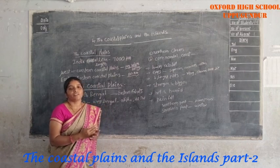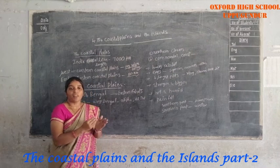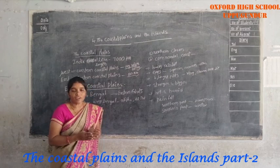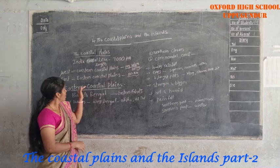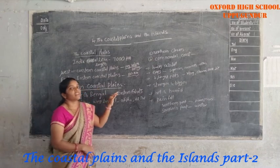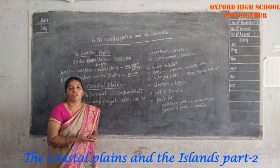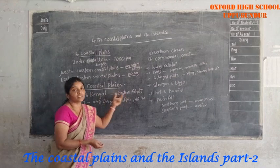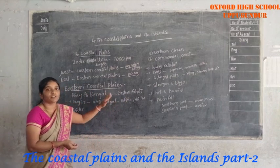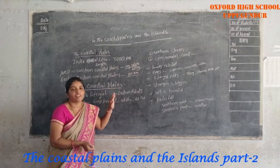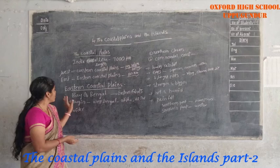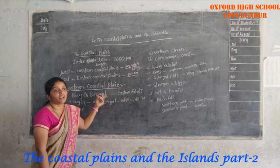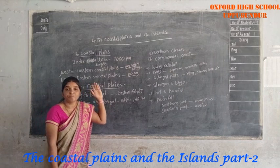These Eastern Coastal Plains lie between the Bay of Bengal and the Eastern Ghats. The Eastern Coastal Plains begin in West Bengal, while the Western Coastal Plains begin in Gujarat.